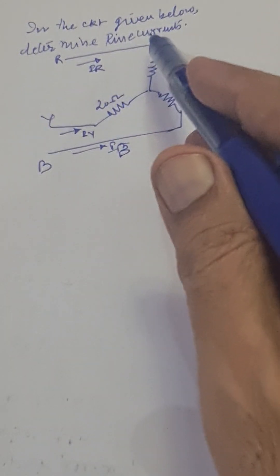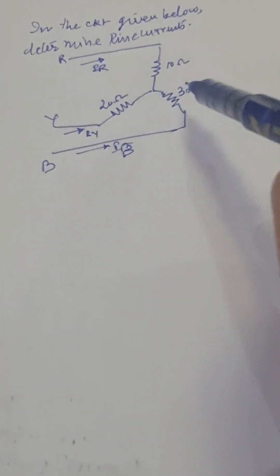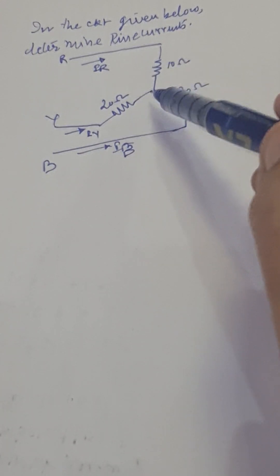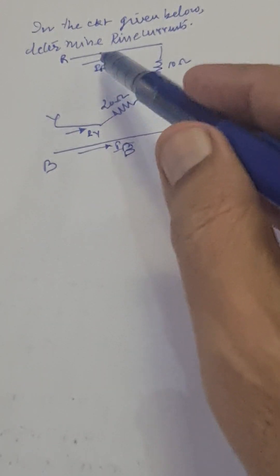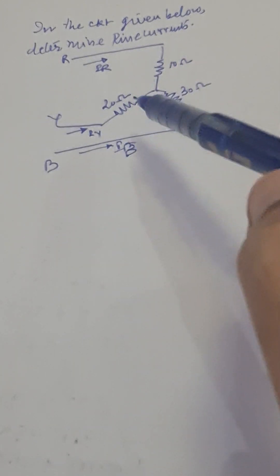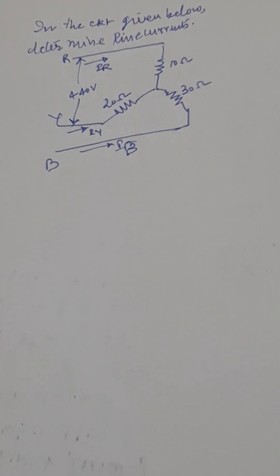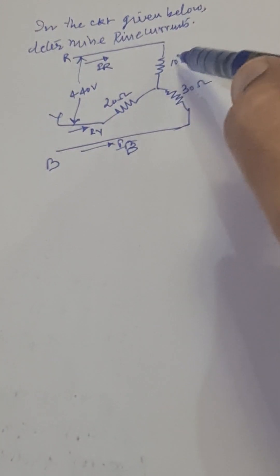In the circuit given below, determine line currents. Here, 10 ohm, 20 ohm, and 30 ohm resistances are connected in a star. We have to find out the currents IR, IY, and IB. The applied voltage is 440 volts — a balanced three-phase supply. This load is unbalanced, so line currents will also be unbalanced; they will not be at 120 degrees and equal to each other.